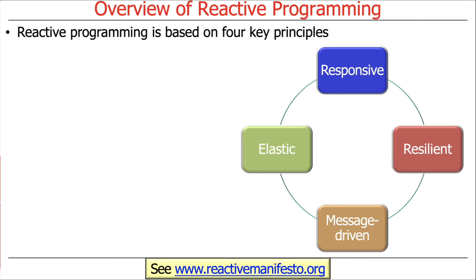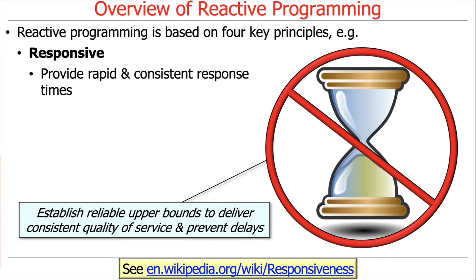Reactive programming is based on four key principles, all part of the so-called Reactive Manifesto. You can't be taking yourself seriously until you have a manifesto — like the Communist Manifesto or the GNU Manifesto — that shows you're serious about your perspective. There is a Reactive Manifesto you should take a look at if you're interested. There are four key principles, so let's talk about each one in turn.